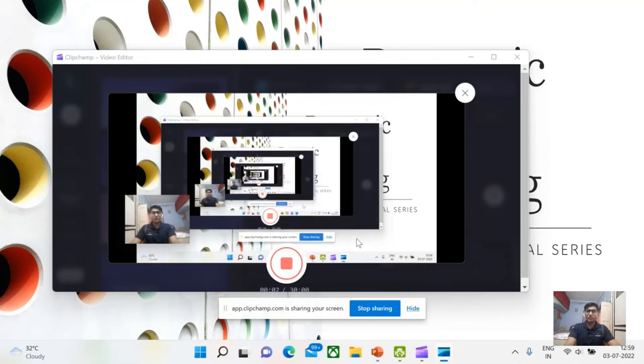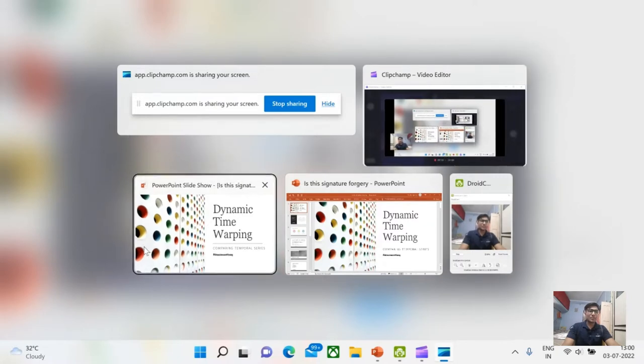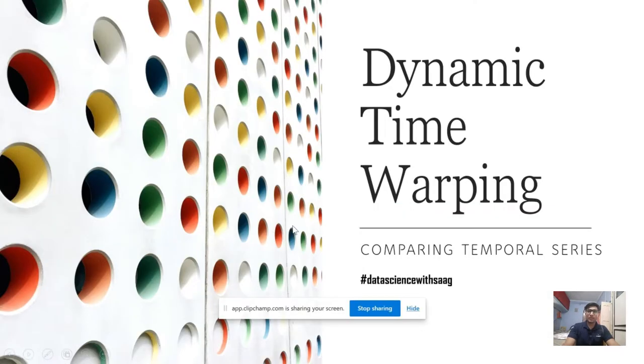Hey everybody, in today's lecture we are going to talk about dynamic time warping. Dynamic time warping is a distance measure between two series. Let us understand what dynamic time warping means, what is the intuitive understanding behind dynamic time warping, and how dynamic time warping works algorithmically.